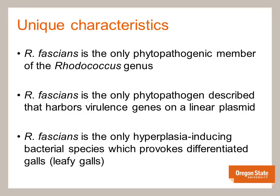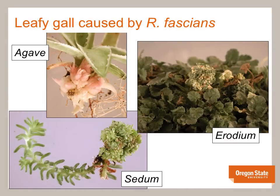Though in some hosts Agrobacterium tumefaciens can produce short shoots from enlarged masses of tissues, somewhat resembling a leafy gall, particularly in very young plants propagated by cuttings or tissue culture. Here are some examples of various host species with leafy gall symptoms. They include agave, erodium, and sedum. Leafy galls most often form at the basis of plants but can also be produced at stem tips, as seen on the erodium to the right.